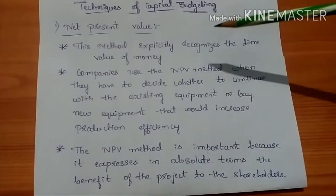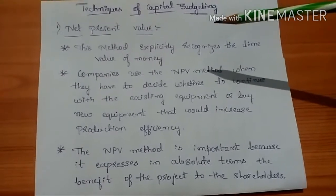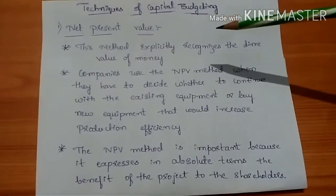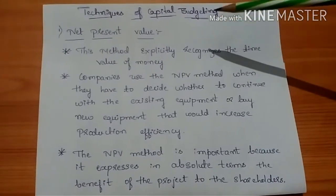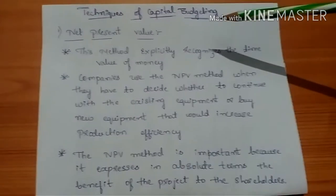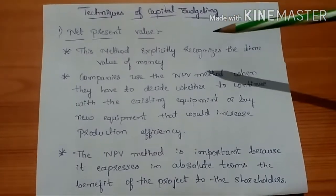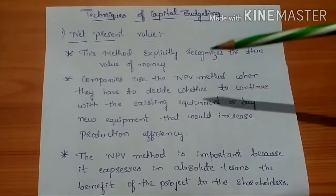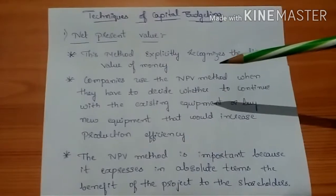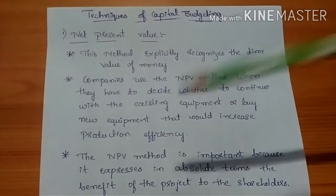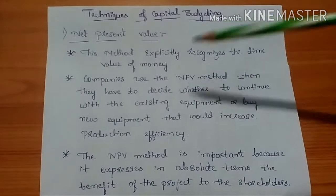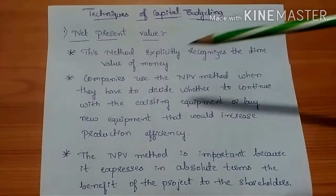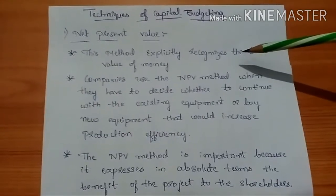NPV method or net present value method is mainly used to decide whether we have to invest in the project or not, that means whether to accept or reject our investment. We can judge whether our project is efficient to us, that means after investing we'll get returns or not. That's what net present value mainly considers, as it accounts for the time value of money.